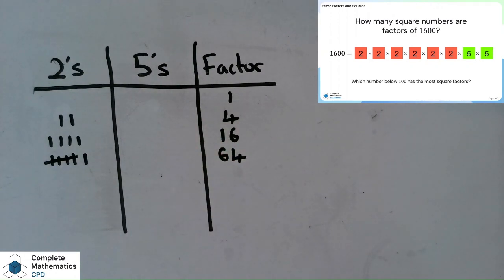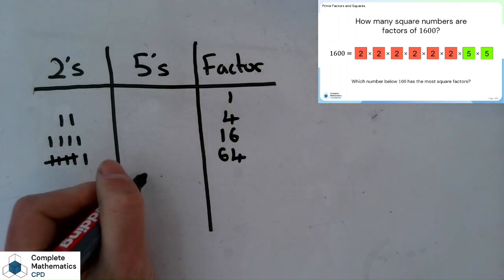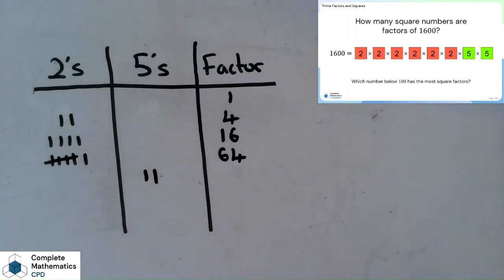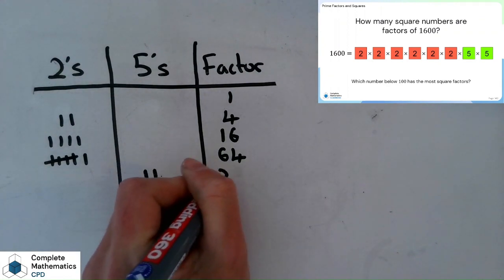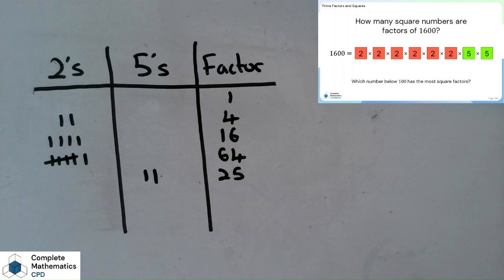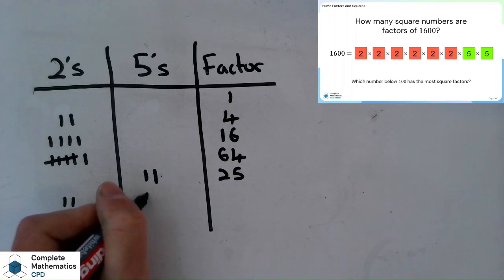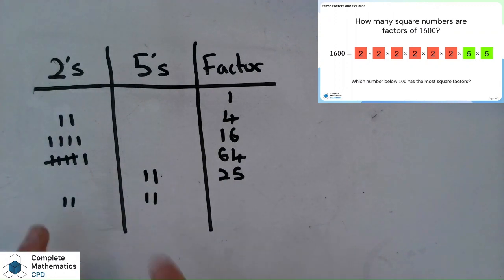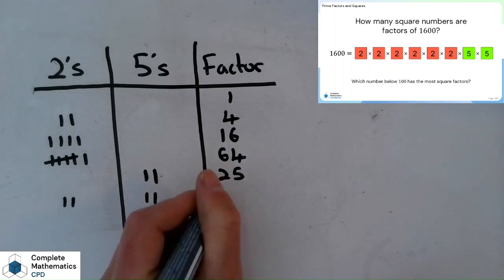Let's start introducing some 5s now. If I just have the 5s exclusively, 5 times 5, which gives me 25 as a square factor. And what about combinations of 2s and 5s together? So 2 2s and 2 5s, that will give me 10 times 10, which is 100.